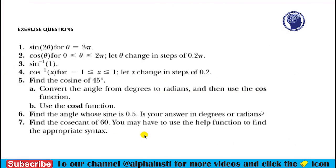In question number five, you have to find the cosine of 45, and you have to use the cosd function as it is written. In question seven, it is written find the cosecant of 60. And cosecant is the inverse of sine, so you can use the sine inverse function. So I hope you have understood these questions and you can easily perform it.